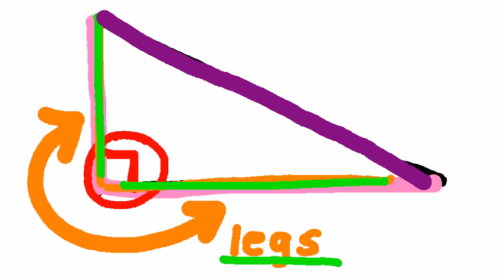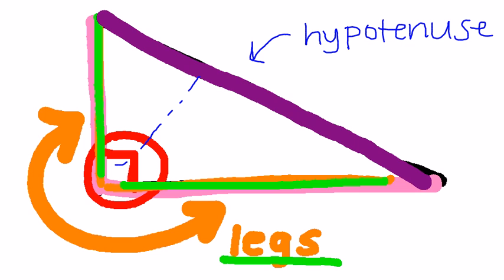This side right here is called the hypotenuse. And the hypotenuse is right across the right angle. It is also the longest side length in the triangle.